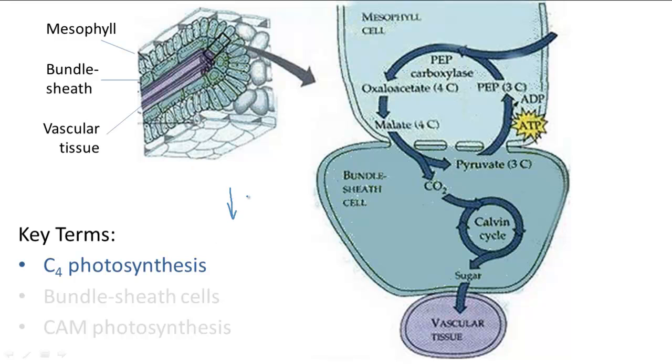So to compensate for this decreased level of CO2, the C4 pathway has an extra cycle before the Calvin cycle that first converts CO2 into a 4 carbon organic acid. And this is where C4 gets its name from, C4 for 4 carbon.